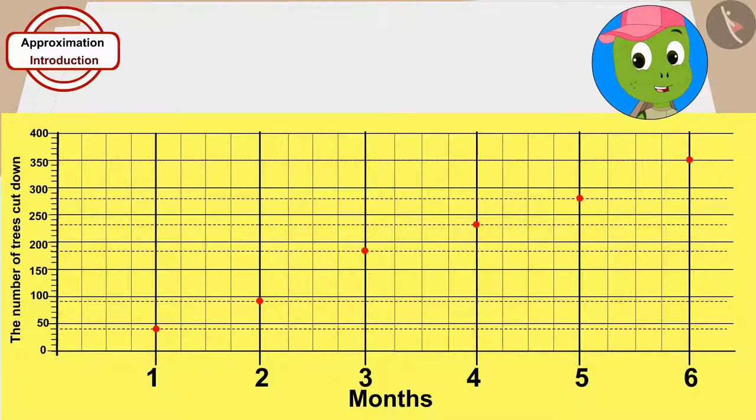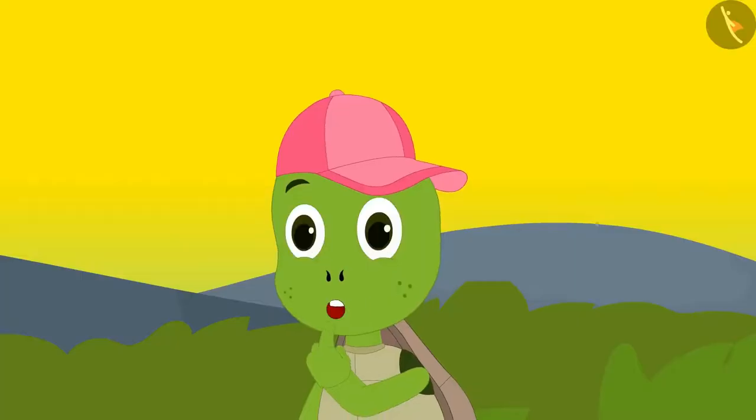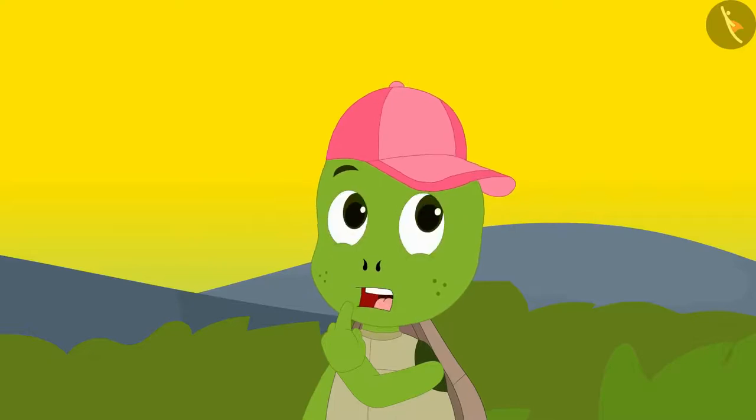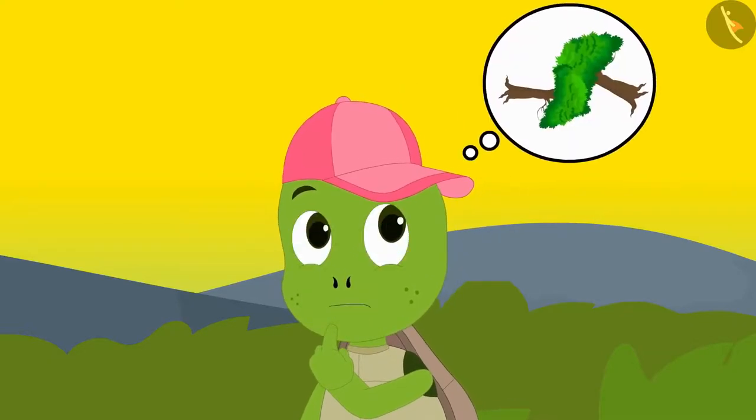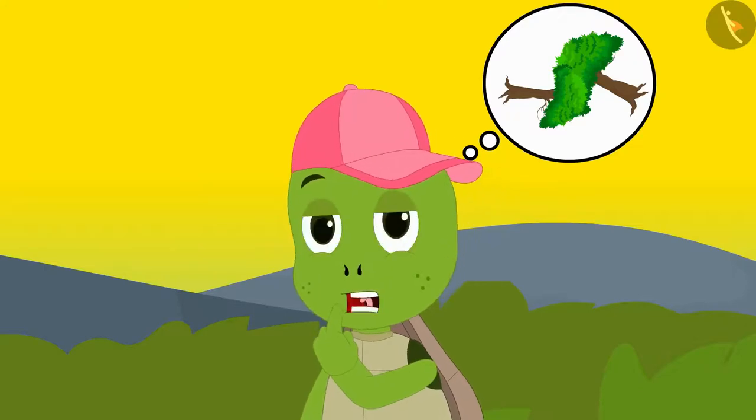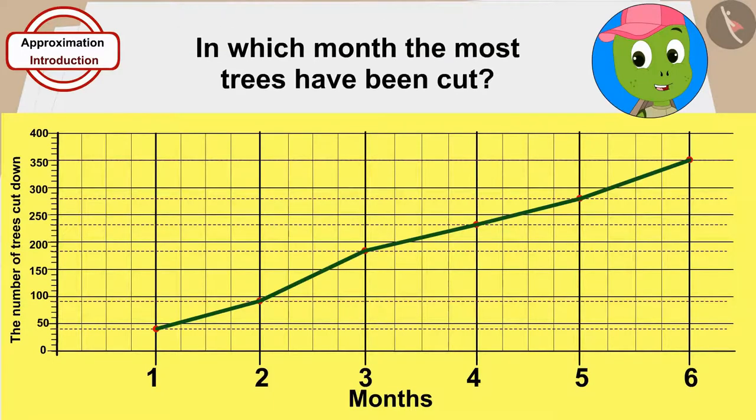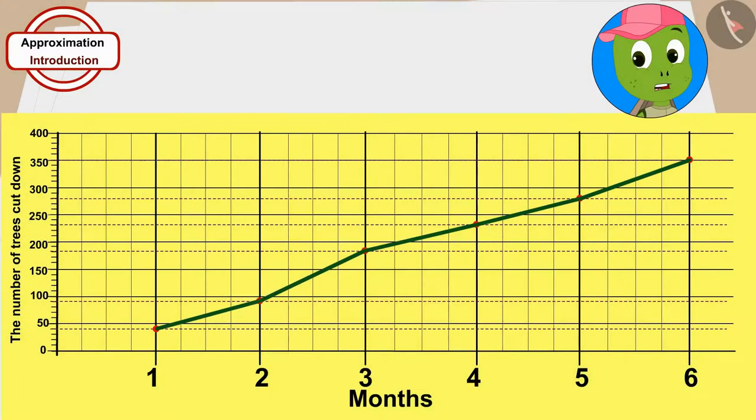Six months have passed. This is a very serious problem. So many trees are cut every month. But, in what month have the most trees been cut down? Children, by looking at this chart, can you tell in which month the most trees have been cut? There is maximum difference between the dots of the second and third months. So, the maximum trees were cut in the third month.